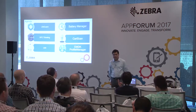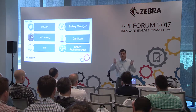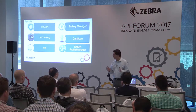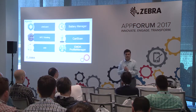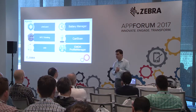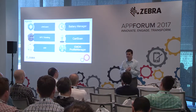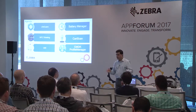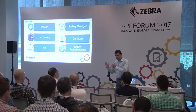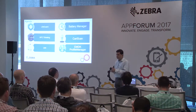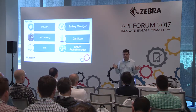The solutions I mentioned — we have four verticals that we are targeting. I don't have everything here for all four verticals; I'm hoping in the next few months we'll make more information available. The four verticals are: transportation and logistics, healthcare, warehouse, and retail. Those are the four things we are focusing on.